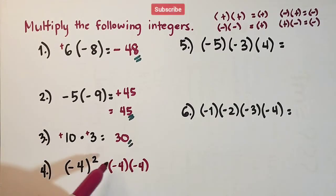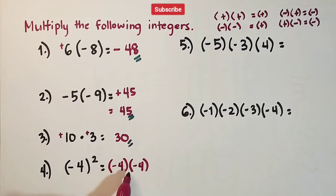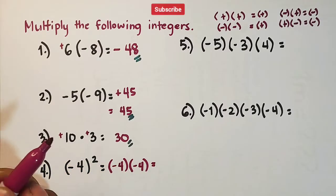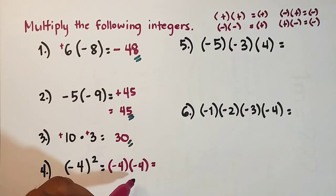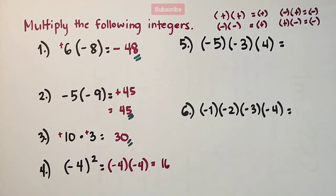So, one and two, that's what the exponent of 2 means. And as you can see, the two integers are both negative, or in other words, same sign. Negative times negative, that is positive. No need to write the positive sign. And 4 times 4 is simply 16. And this is the answer for number four.